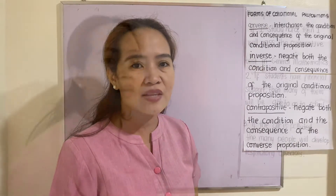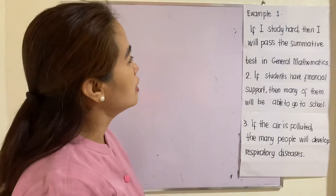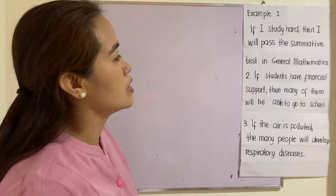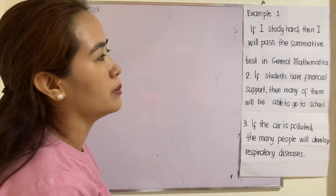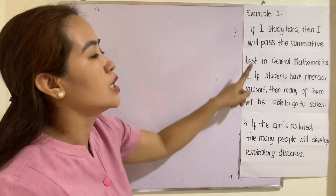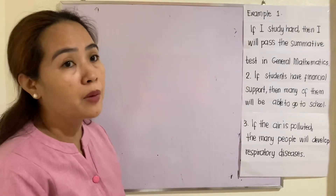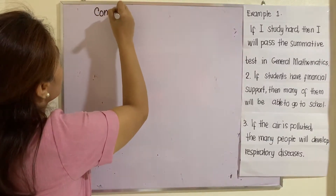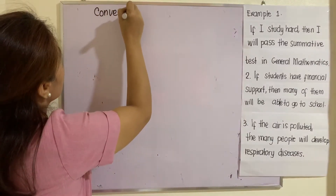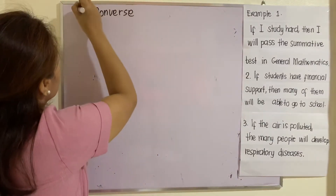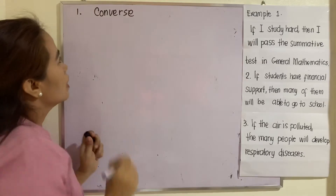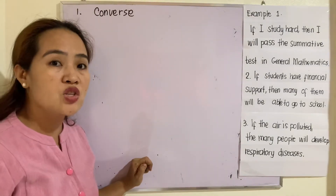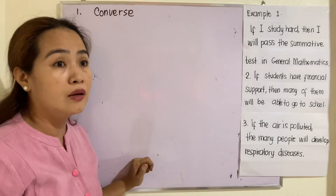Let's give an example. Example one: If I study hard, then I will pass the summative test in general mathematics. This is the original conditional proposition. To get the converse, according to its definition, you will just interchange the if and the then part.